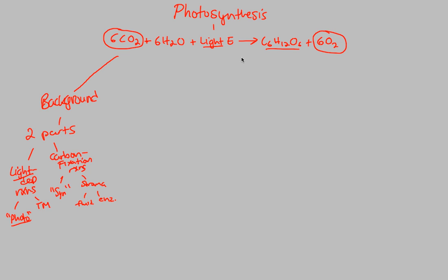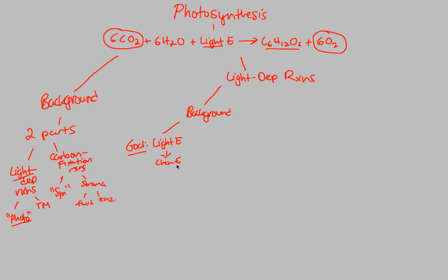The overall goal of the light-dependent reactions is to turn light energy into chemical energy. Specifically, we turn it into two main products: ATP, and NADPH — note that it's NADPH, not NADH; the P likely stands for photosynthesis. These are the two types of chemical energy produced utilizing light energy provided by photons of sunlight.